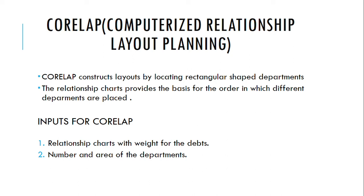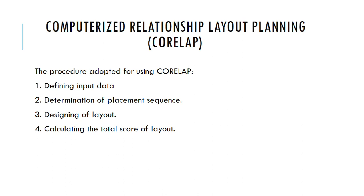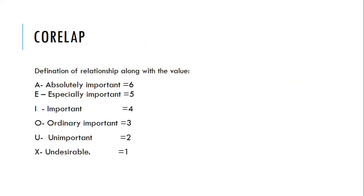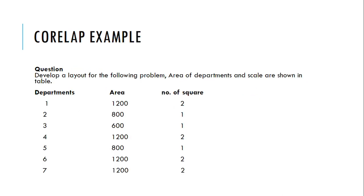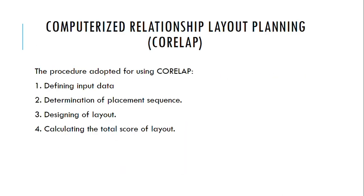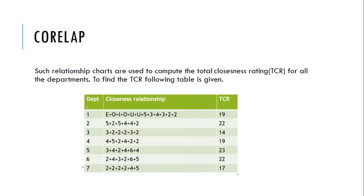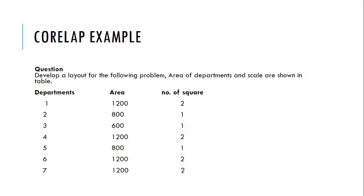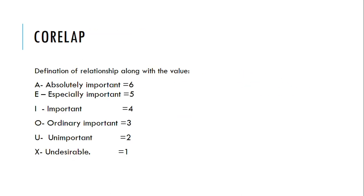The inputs also include the number and area of the departments. In CORELAP, the definition of relationships uses values; here also we use A, E, I, O, U ratings but the values are different, ranging from 6 to 1 in descending order.